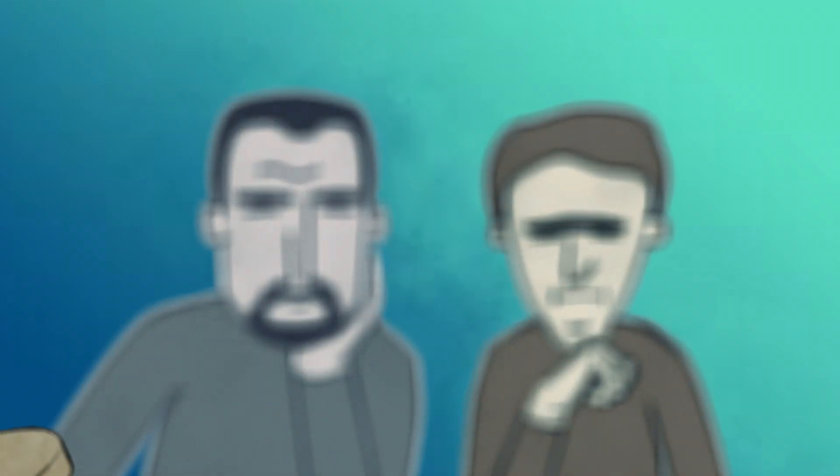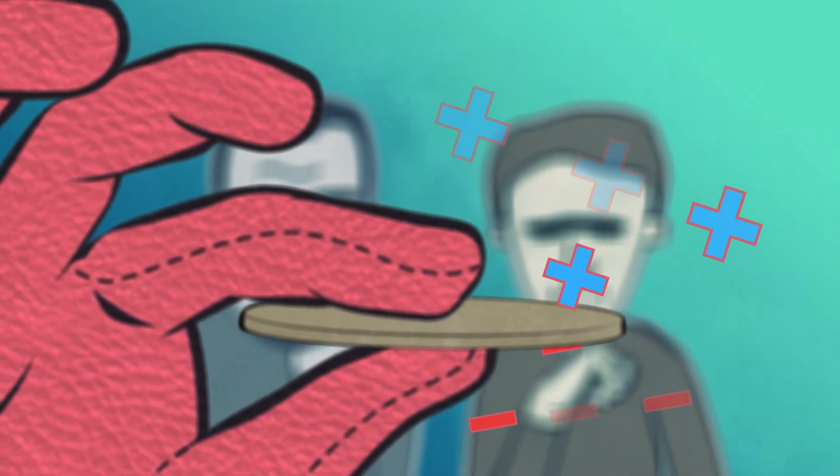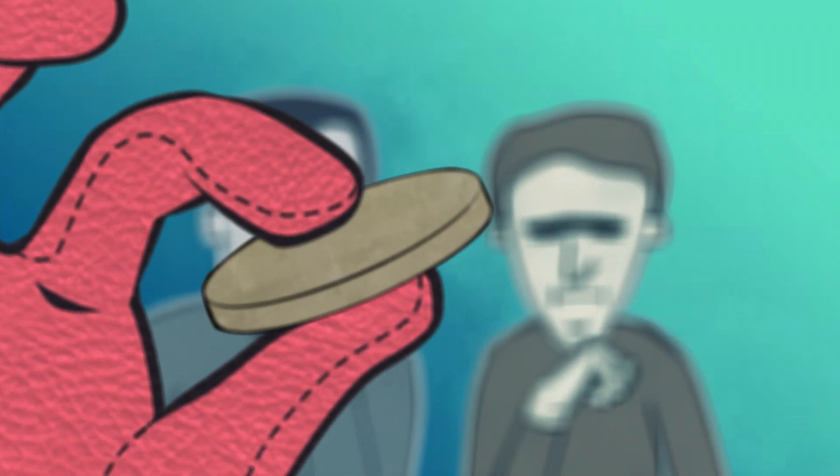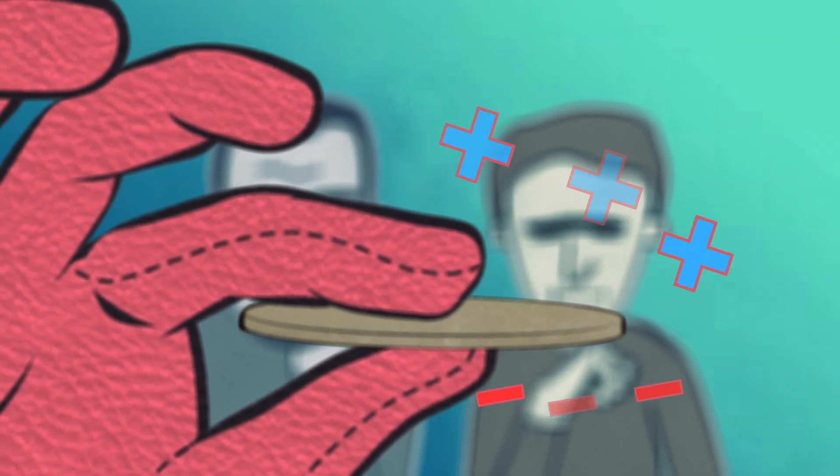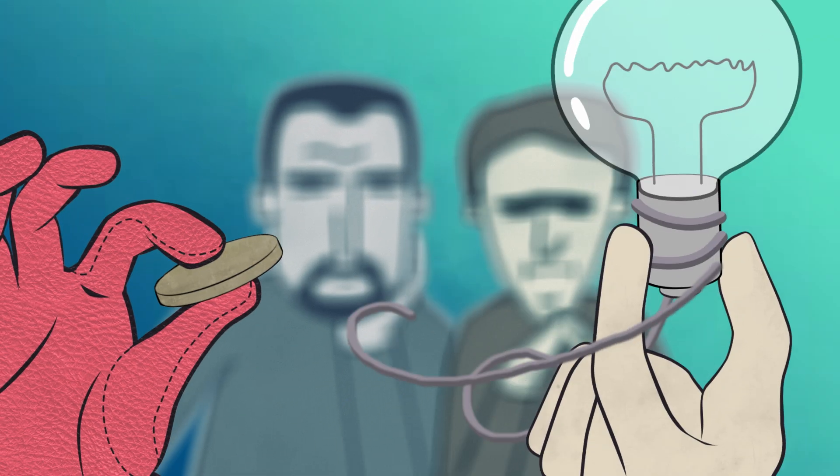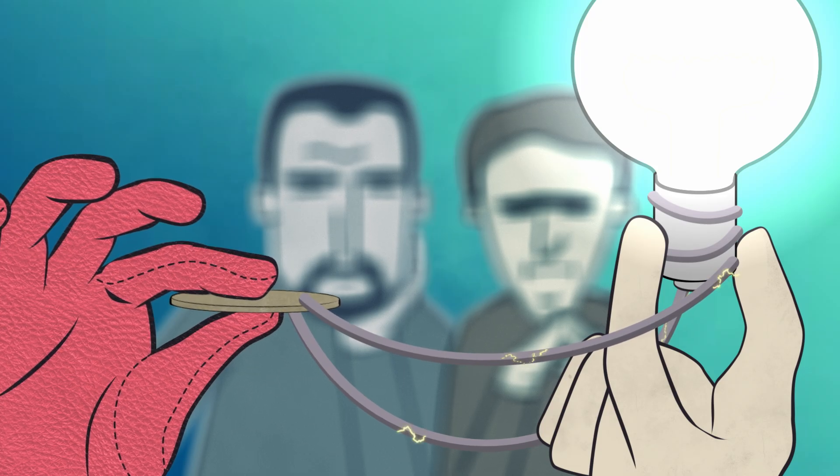They discovered that if they compressed thin slices of certain crystals, positive and negative charges would appear on opposite faces. This difference in charge, or voltage, meant that the compressed crystal could drive current through a circuit like a battery.